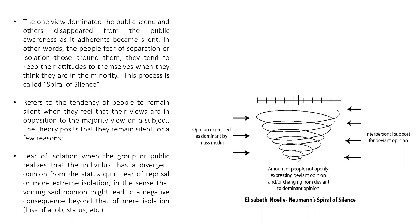One view dominated the public scene and others disappeared from public awareness as its adherents became silent. Those people who are part of the public discourse, if they are forced to not share their opinions, it leads from one segment to another due to the fear of isolation. This whole attitude of silencing the minority can be called the Spiral of Silence. It refers to the tendency of people to remain silent when they feel their views oppose the majority view on a subject.